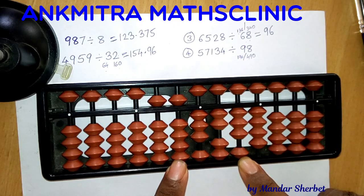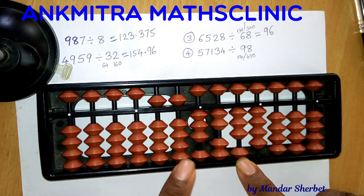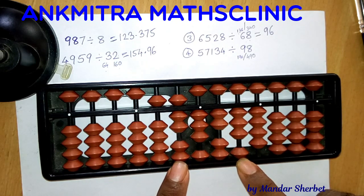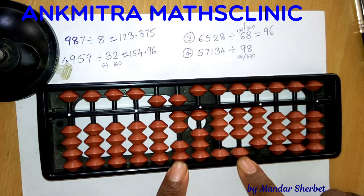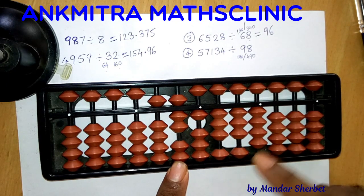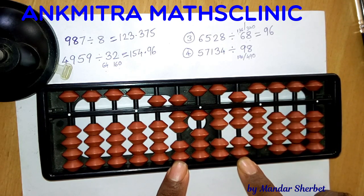323 is still on the same rod — we don't move further until we find a number smaller than the divisor. From 323 we can subtract 2 times 98, which is 196. I'll add 2 on the answer rod and subtract 196: minus 1 here, plus 1 minus 10 for subtracting 9, and plus 4 minus 10 for subtracting 6. We're left with 127.